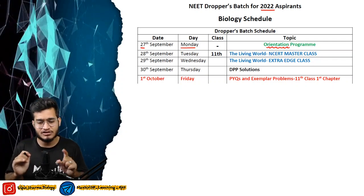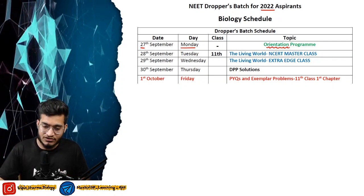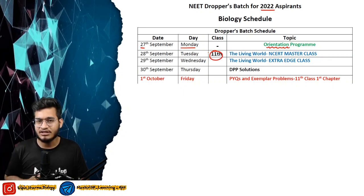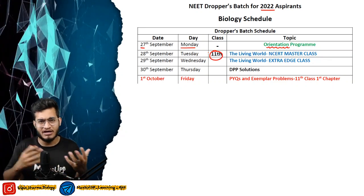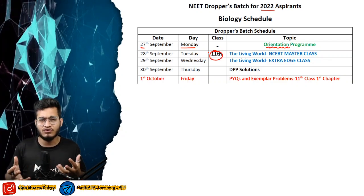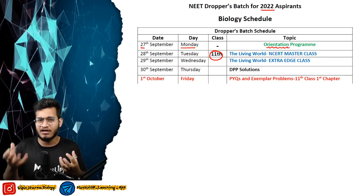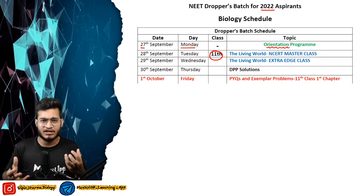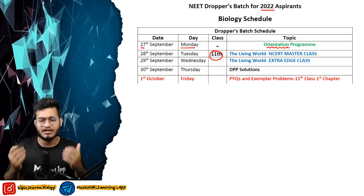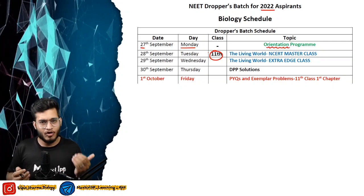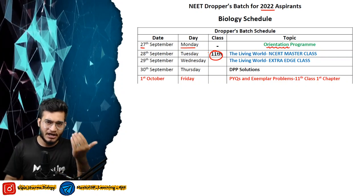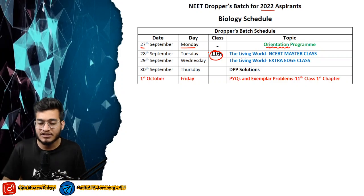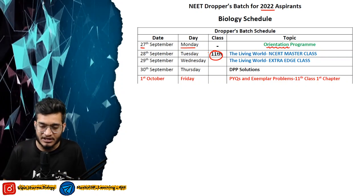On the 28th, Tuesday, 11th class content will start. Since droppers need to cover both 11th and 12th, the approach will be: one unit from 11th, one unit from 12th, alternating, so you won't get bored, continuity will be maintained, and the syllabus will progress at a good pace.